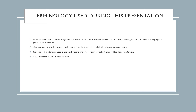Terminology used in this presentation: Floor pantries are generally situated on each floor near the service elevator for maintaining stock of linen, cleaning agents, guest room supplies, etc. Cloakrooms or powder rooms are washrooms in public areas. Sanitary bins are used in cloakrooms or powder rooms for collecting soiled hand and face towels. WC stands for water closet.